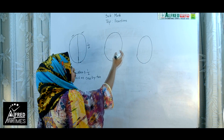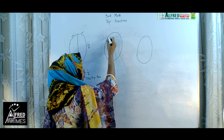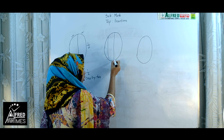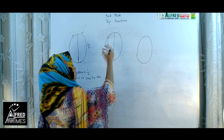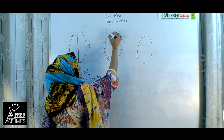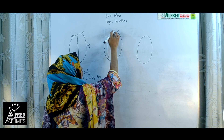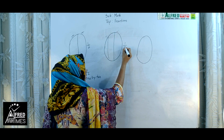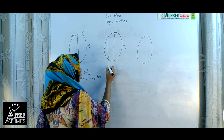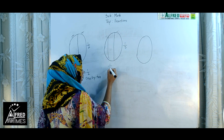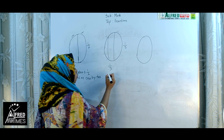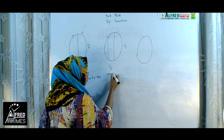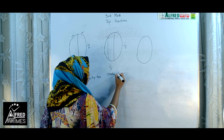Similarly, when we divide one bread into three equal parts, each part we will call one third. Each part is one third. It is written as one third and read as 1 by 3.